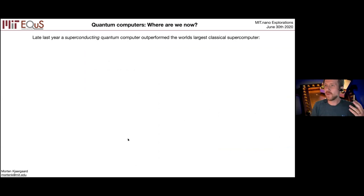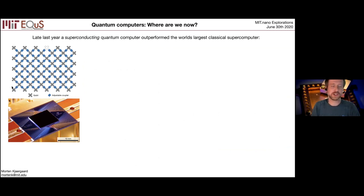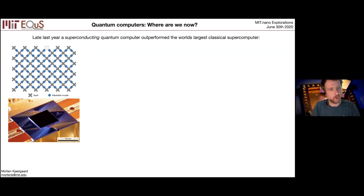Late last year, something known as a superconducting quantum computer outperformed the world's largest classical supercomputer — a pretty phenomenal experimental demonstration. Here is a cartoon picture of the quantum processor used in this experiment. Each of these gray X's are aluminum microfabricated capacitors, roughly 200 by 200 microns each. This was supposed to have been 54 qubits, but one of them didn't work, so this is a 53-qubit quantum computer. The blue elements are couplers that can turn on and off the coupling between these quantum two-level systems.